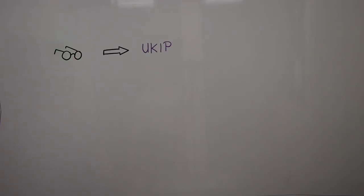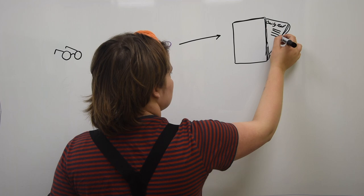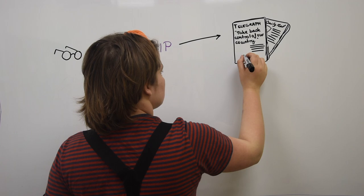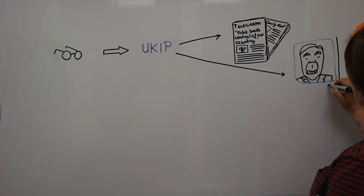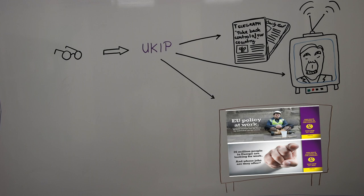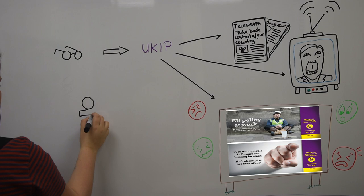Now we will have a look at what factors influenced the quick growth of the party. Firstly, UKIP used a lot of different media to spread its message: take back control of our country. Everyone has already heard this message, take back control. Here are two examples of signs used by UKIP. If you look at the second sign, 26 million people in Europe are looking for work. And whose jobs are they after?